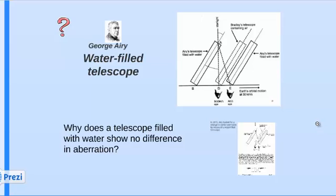Thinking about the water-filled telescope: George Airy expected to see a larger amount of stellar aberration for a telescope filled with water. This did not happen, and the reason is obvious — stellar aberration is an effect that takes place in space, so there is no reason why there would be an increased level of stellar aberration observed with a telescope filled with water.